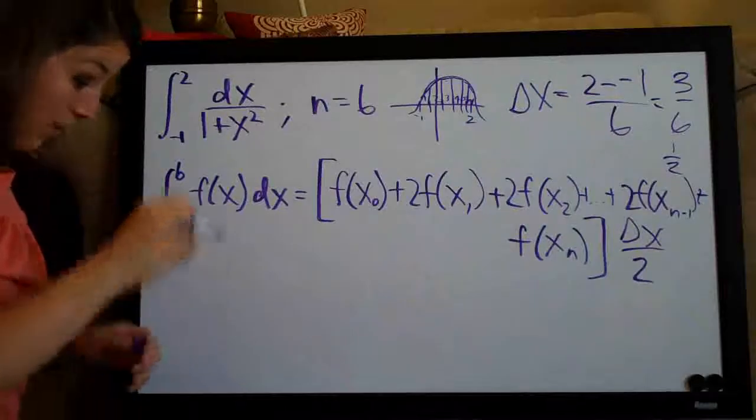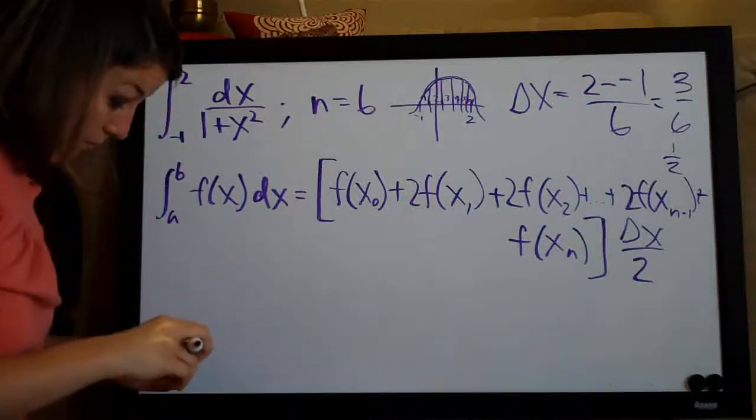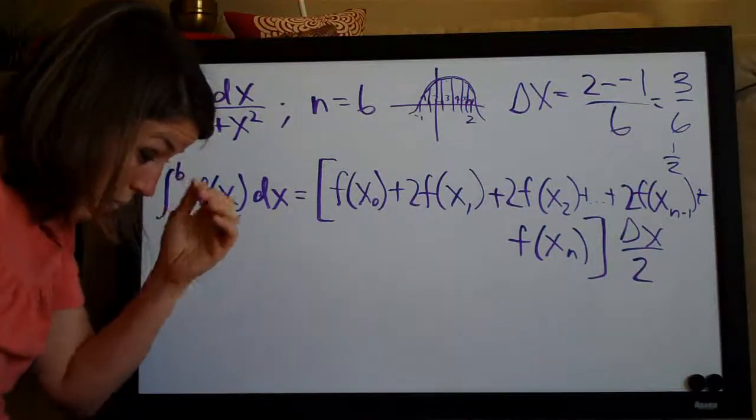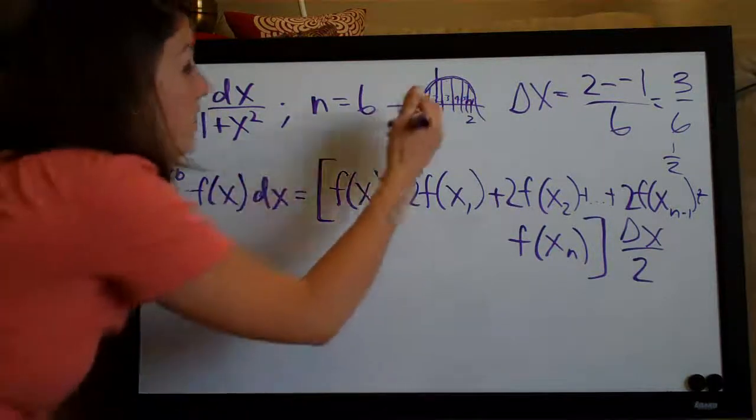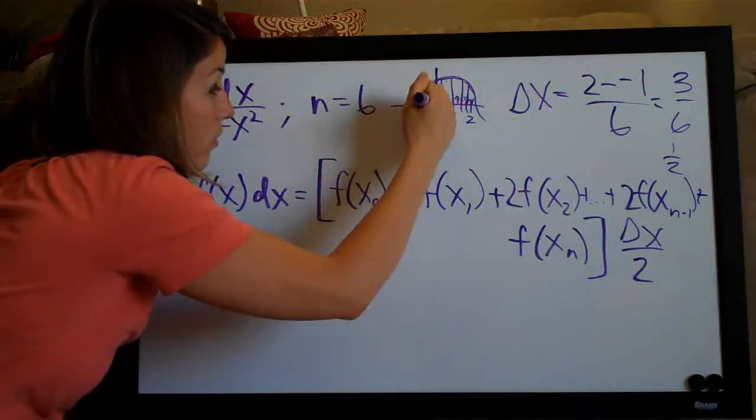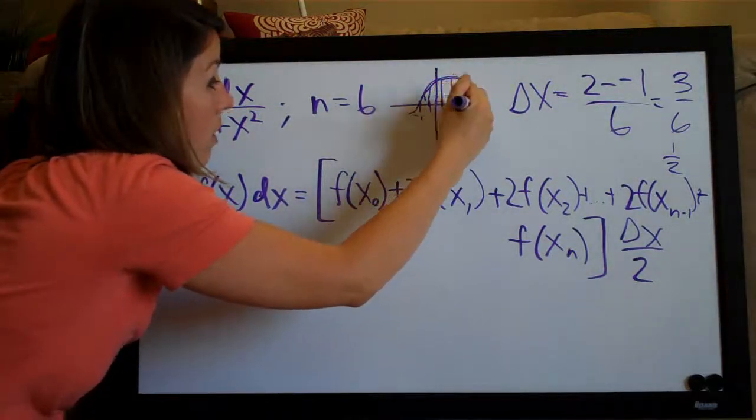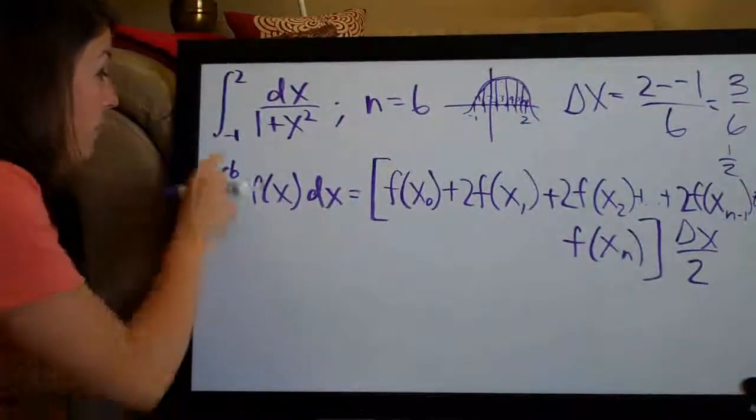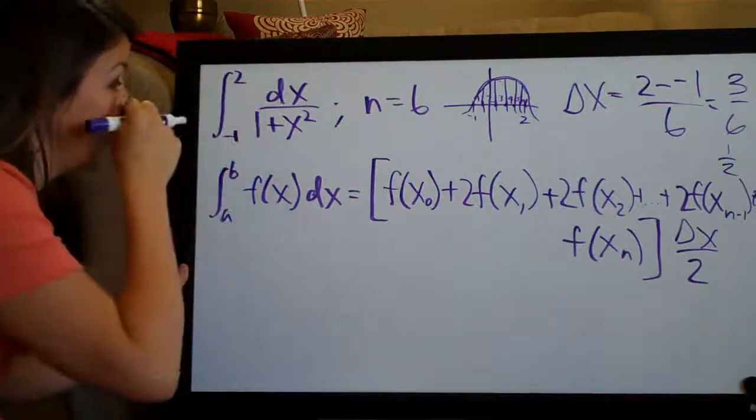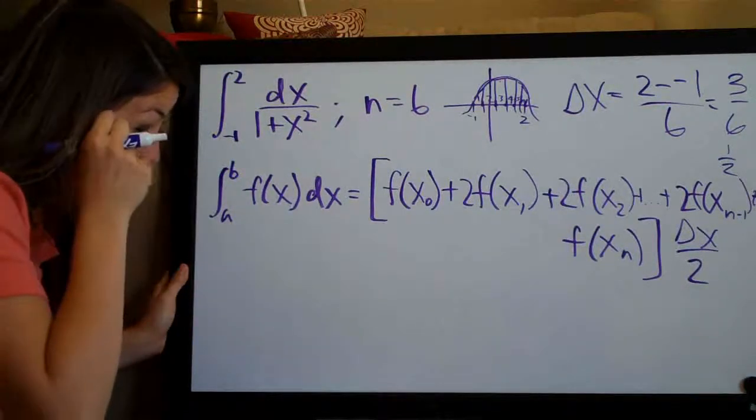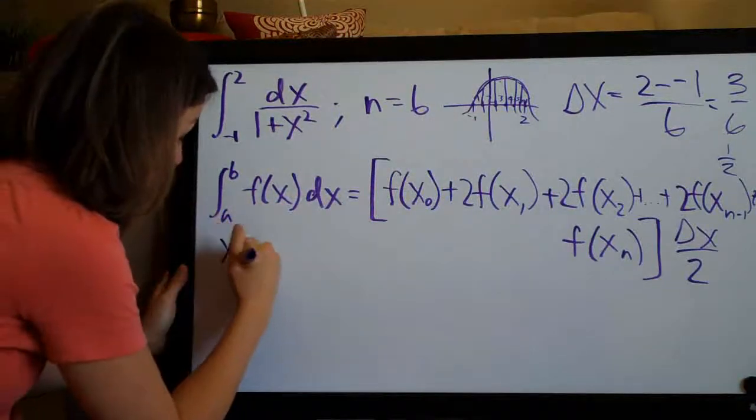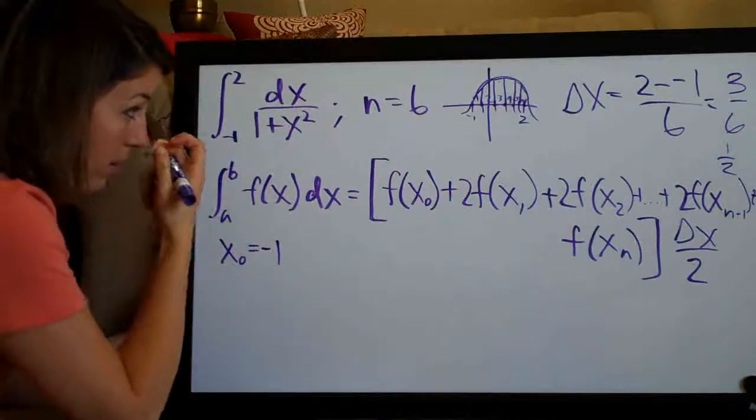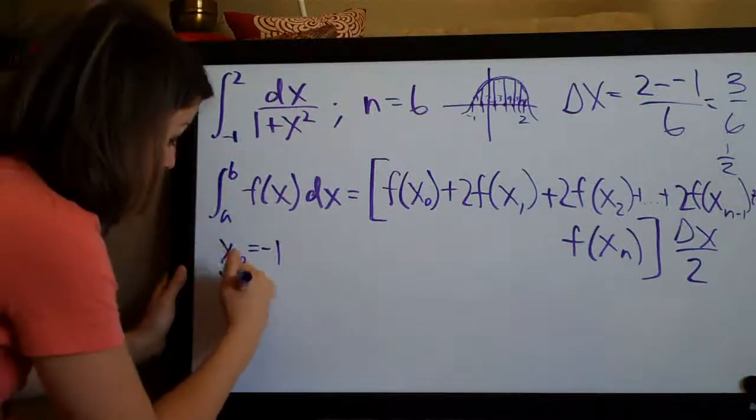So given that delta x is 1 half, now we need to write down what our, what these values are, like here, here, here, here, all the way through. We need to write down what those values are. So the first one obviously is negative 1. The first one is always the bottom number, the last one is always the top number. But x of 0 will be the first number, negative 1, and this bottom number here. And then we just keep writing, right?